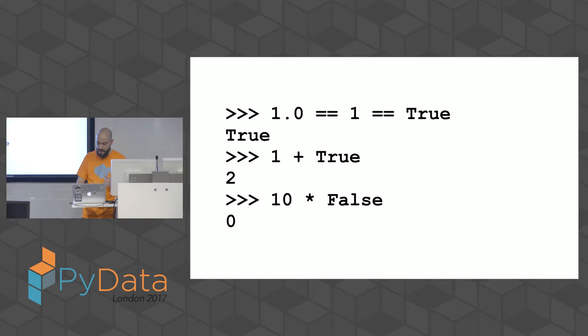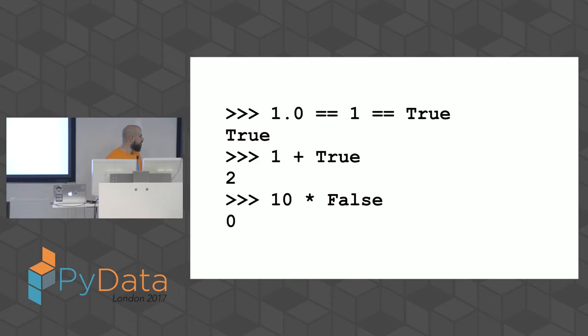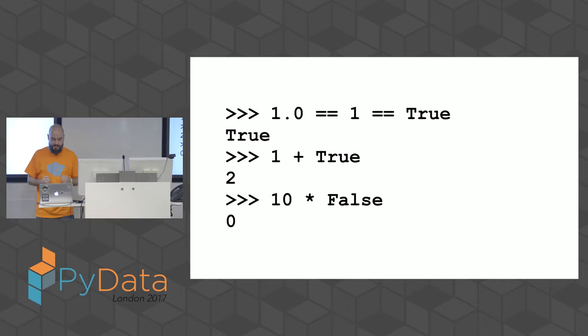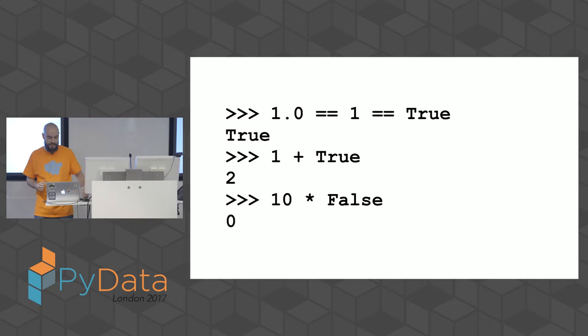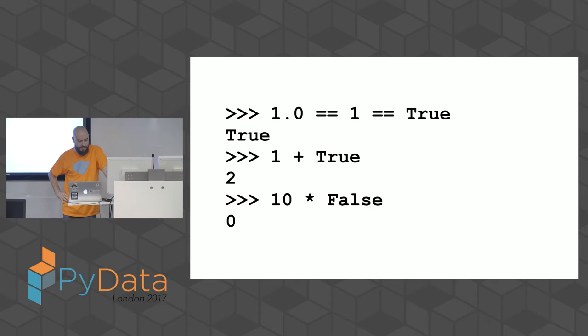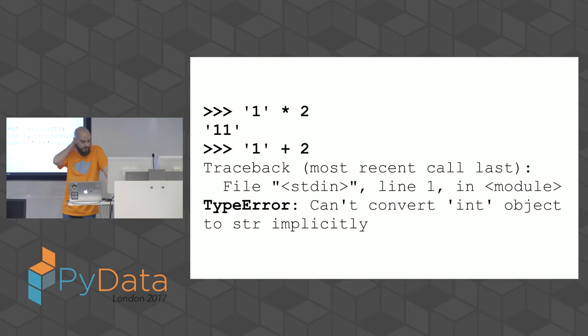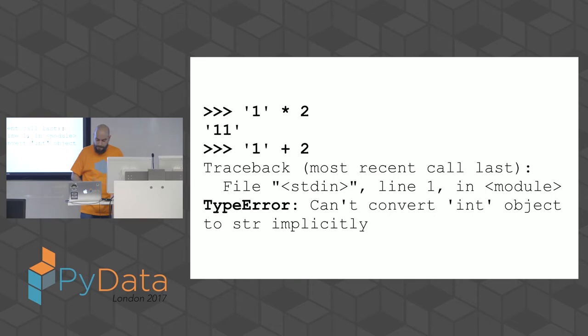The dynamic nature of Python sometimes leads to 'what the hell' moments that make developers coming from a static background cringe. For example, booleans are treated as integers — booleans are effectively a subset of int in Python. So you can sum a boolean to an integer, multiply an integer by a boolean, and so on. Also, multiplying a string by a number is allowed as string repetition, while other operations raise a type error.